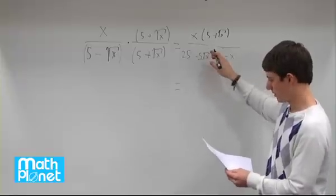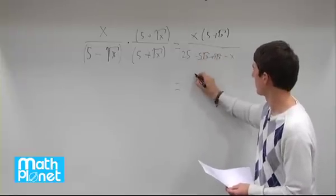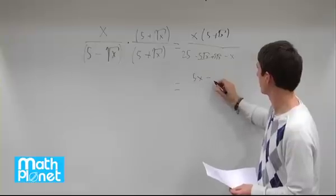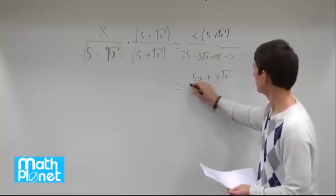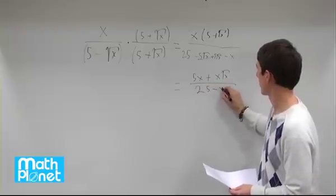we can expand this a little bit with the x here. So we have 5x plus x times root x all over 25 minus x.